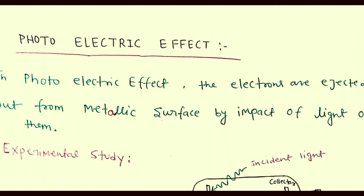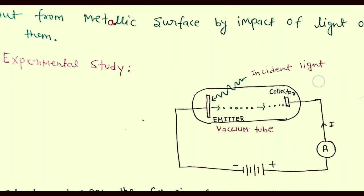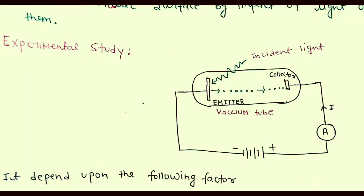To understand in detail, let's consider an experiment. To perform such an experiment, we need a vacuum tube, an emitter, a battery, and some connecting wires. And we need a rheostat, which I have not shown in this picture to make this simple.